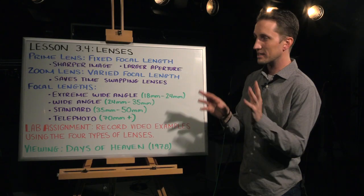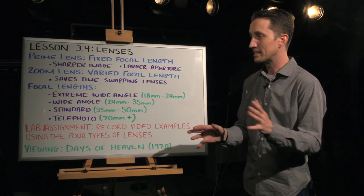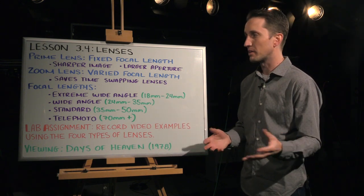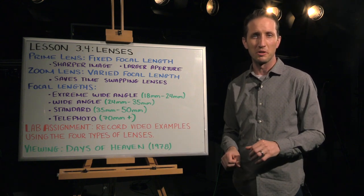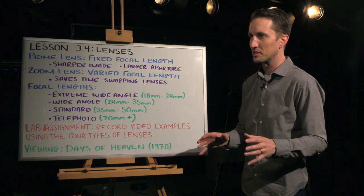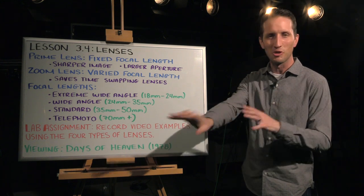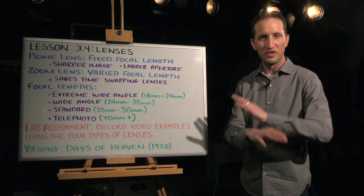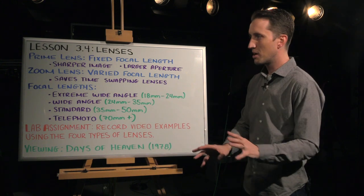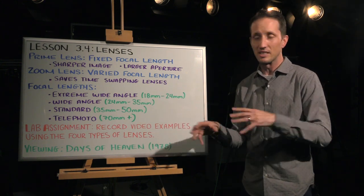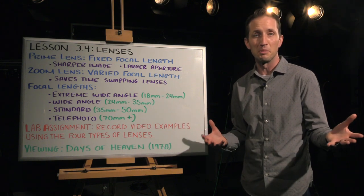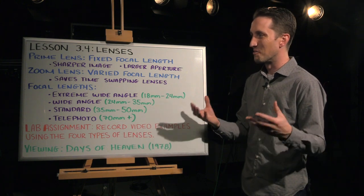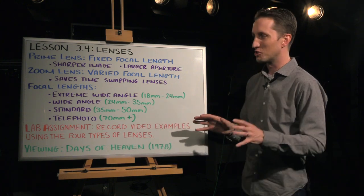Another advantage to shooting on a prime lens — that I didn't put up here because I ran out of space — is that it forces the camera operators to get up and move around. Too often I'll have students filming a sporting event or an assembly and they'll just find a quiet place in the corner, set up their camera and tripod, and film the whole event from that single vantage point. But if you were shooting on prime lenses, you would have to get up and move around. If you want a close-up, then you need to be close. So that's certainly another advantage to shooting on prime lenses.